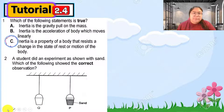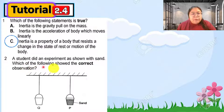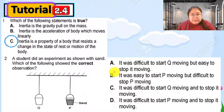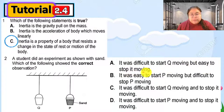Question two shows an experiment with two pails P and Q. Pail P contains sand, making it heavier than pail Q which is empty. The question asks which observation is correct. For option A: it was difficult to start Q moving but easy to stop it. Since Q is empty its mass is less, so it should be easier to start — option A is wrong.